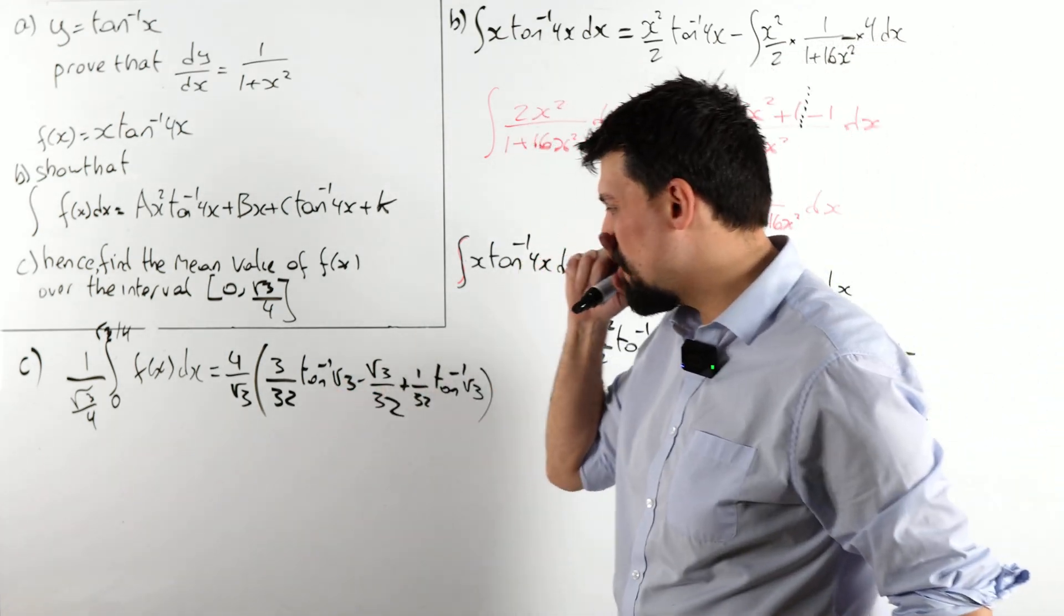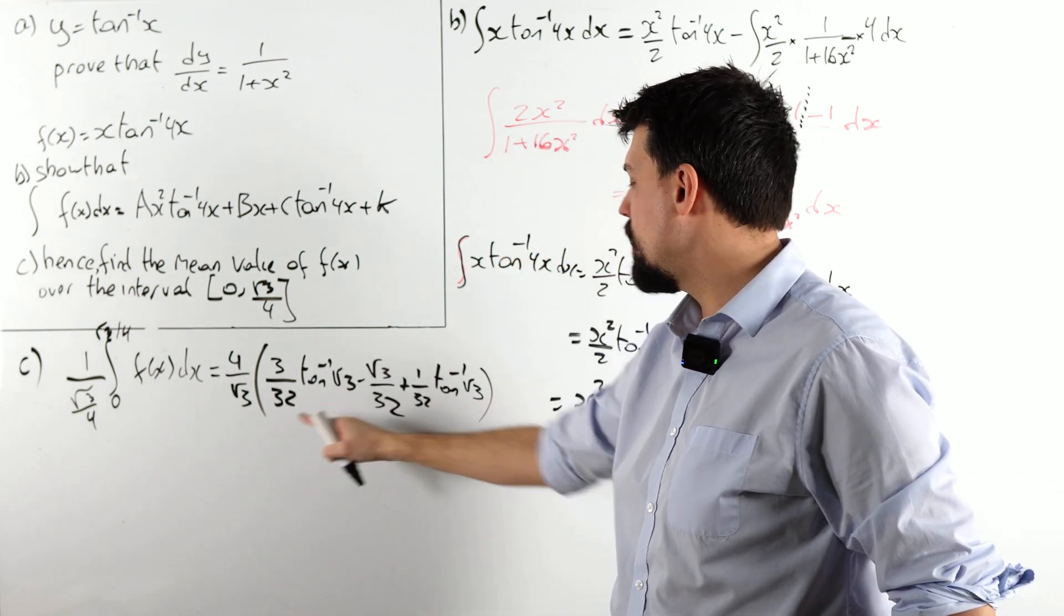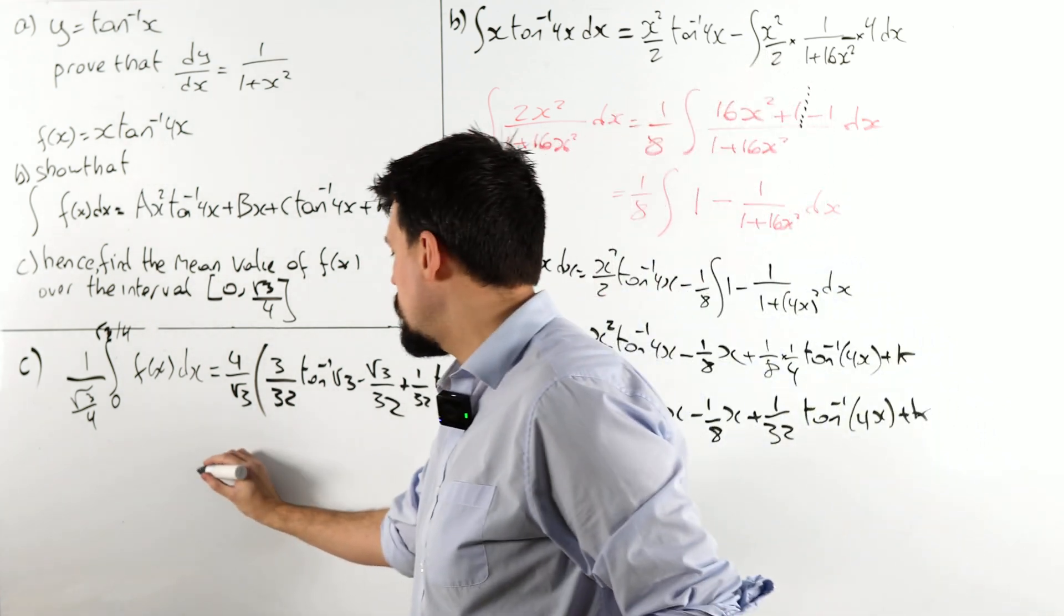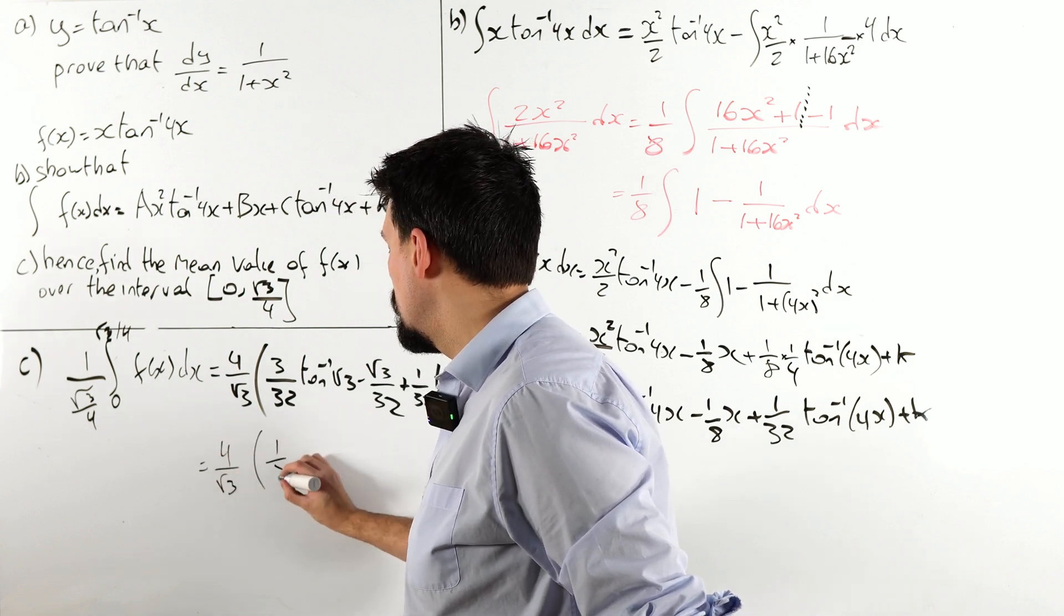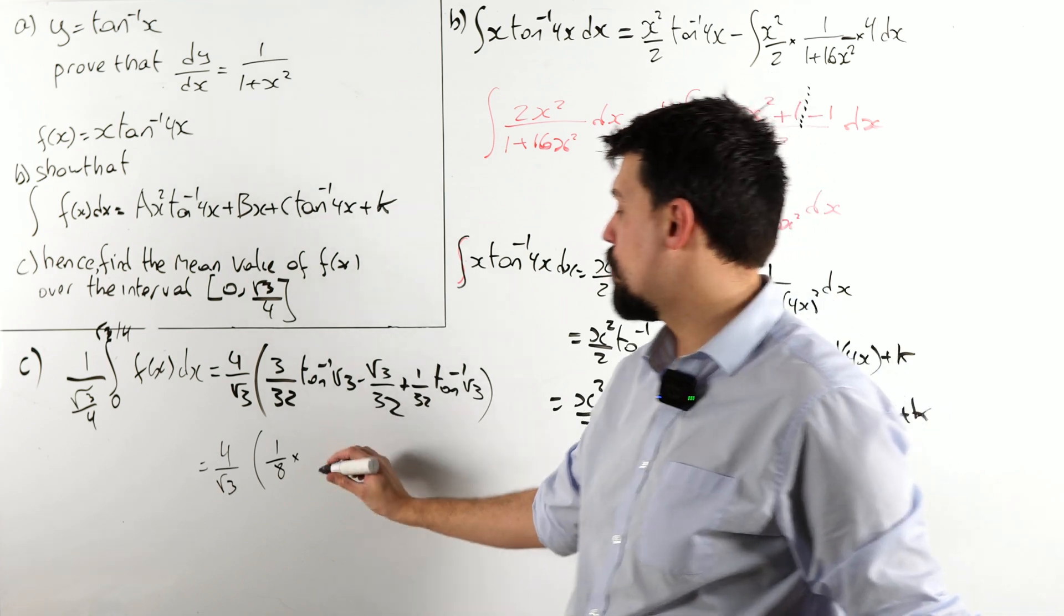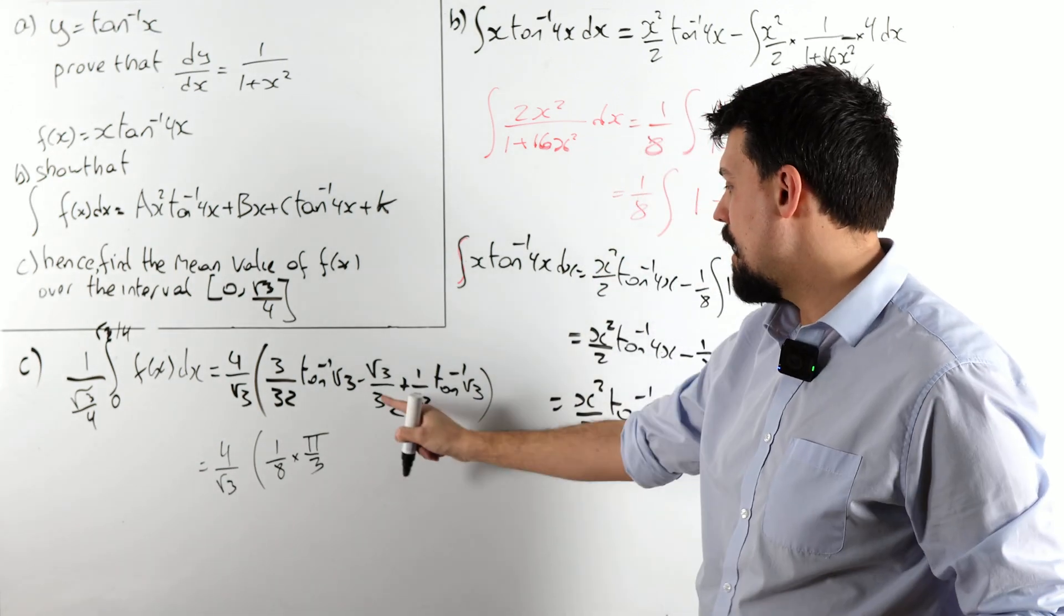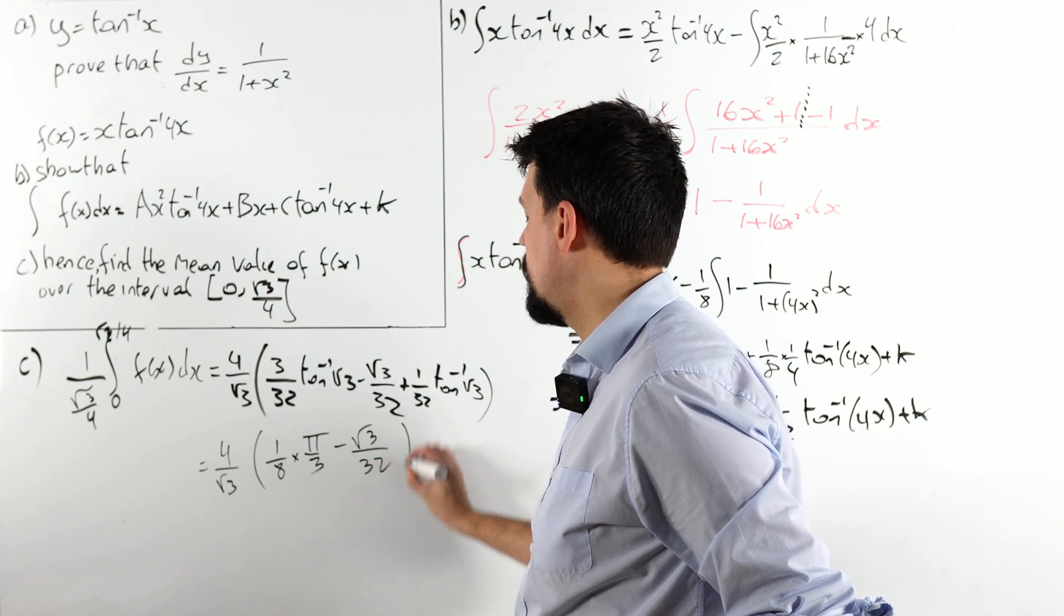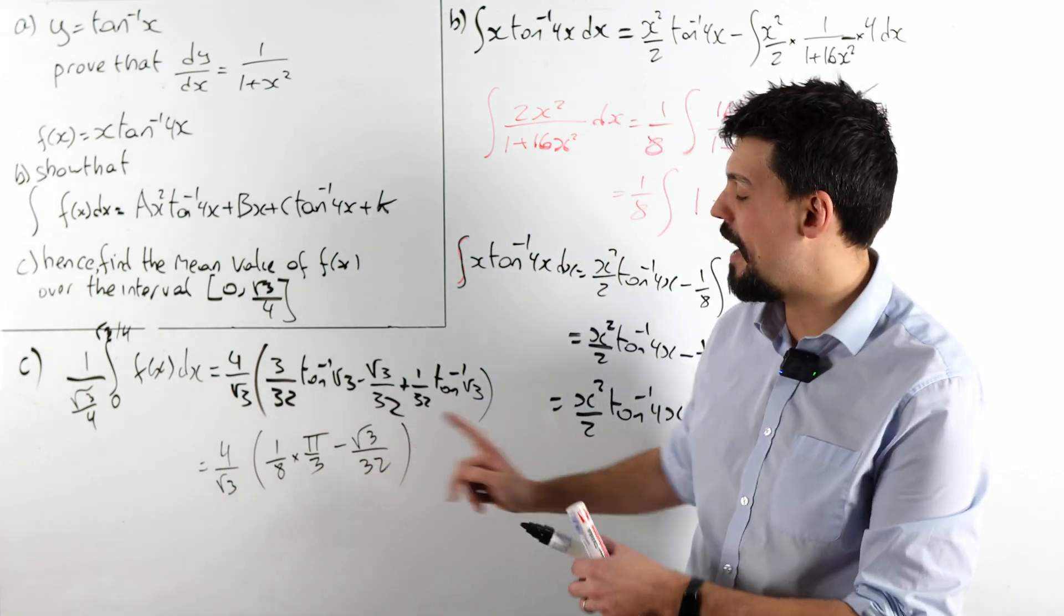Right, inverse tan of root 3. Well, we could actually collect these to 3 over 32, 1 over 32, that will give me 1 eighth. So what do I get? I get 4 over root 3, 1 eighth, inverse tan of root 3, look at this, no looking at the calculator, is pi over 3. And I get the minus root 3 over 32. This is why I'm sneaky, I didn't change that yet, because I knew that was coming.